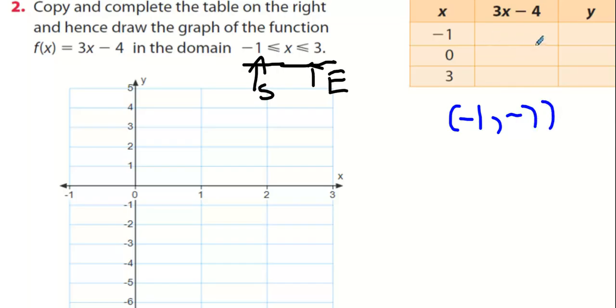In this question they don't want all the points, they just want three of them. They want minus 1 giving minus 7, what's the answer for 0? Minus 4. And what's the answer for 3? X value 3, y value of 5.